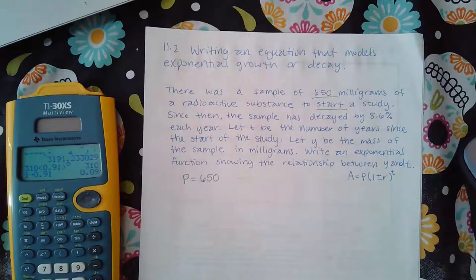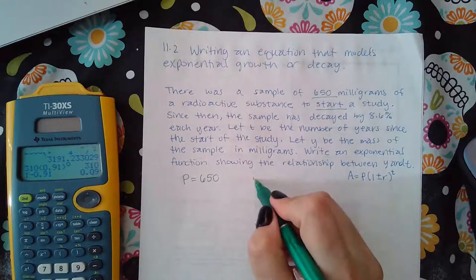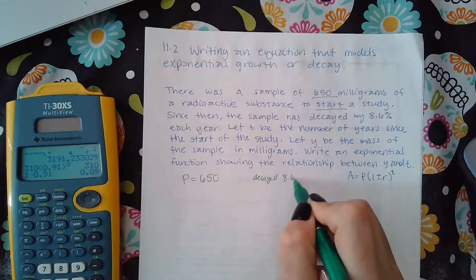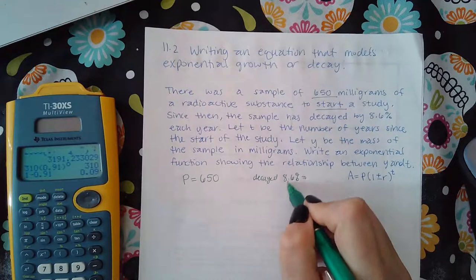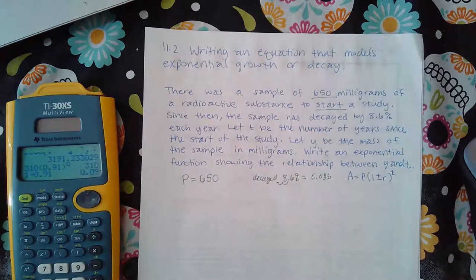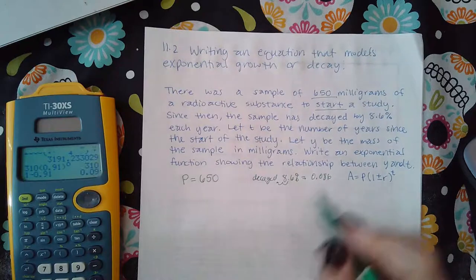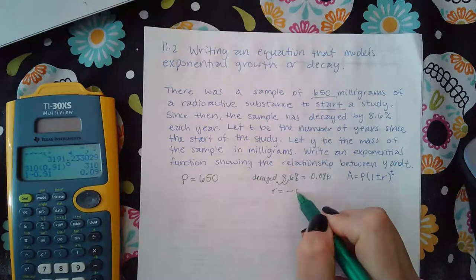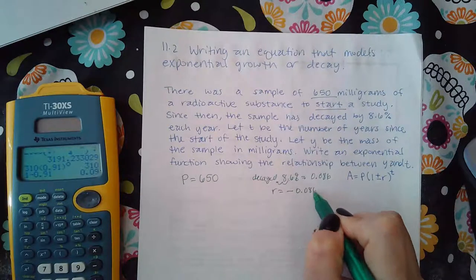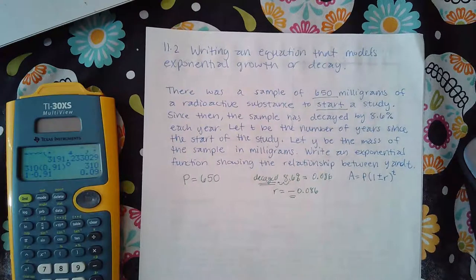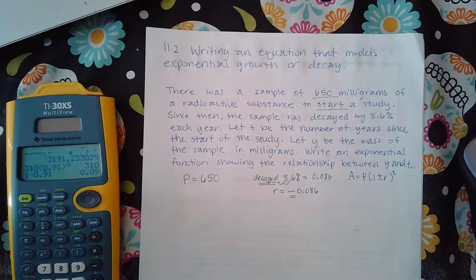Since then, the sample has decayed 8.6%, which is 0.086, so that's my R. But because it decayed, that means my R is negative 0.086, because of the word decayed—it's negative.